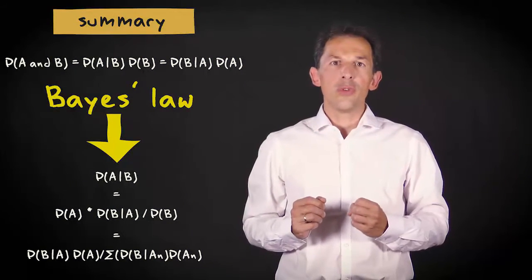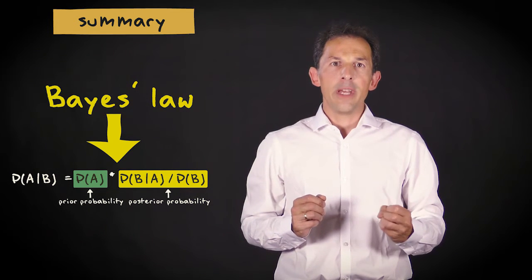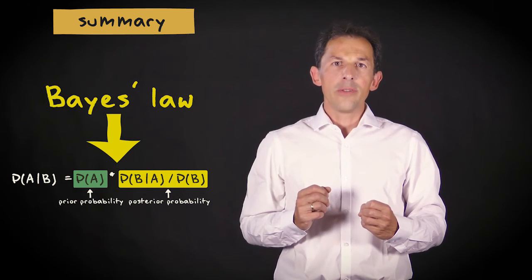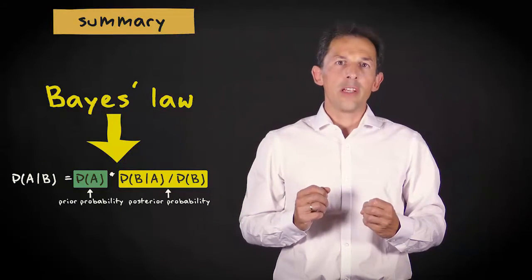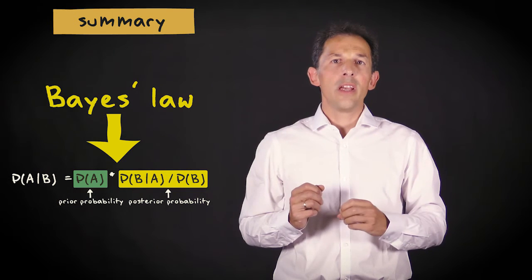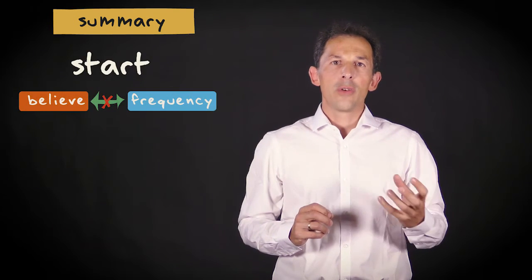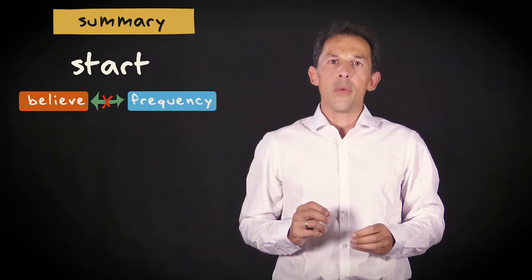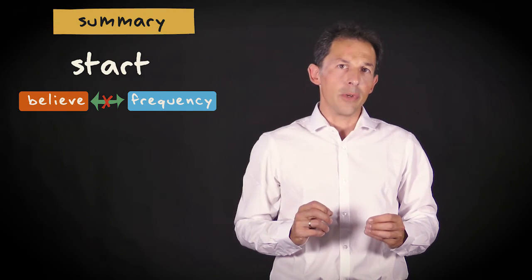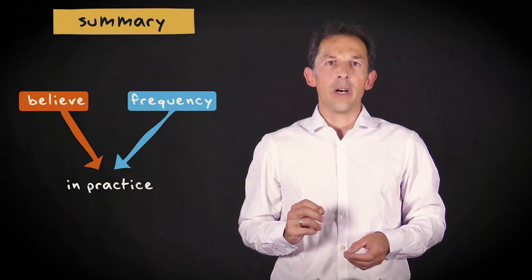Bayes' law is also used to express how a prior belief in a hypothesis A can be updated by new evidence B. In that context, the probability of A is called a prior probability and the conditional probability of A given B is called a posterior probability. Considering probability as a belief rather than a frequency-based entity is a different theoretical starting point. However, in practice, elements of the two are often combined.